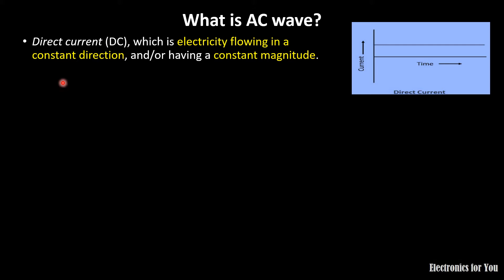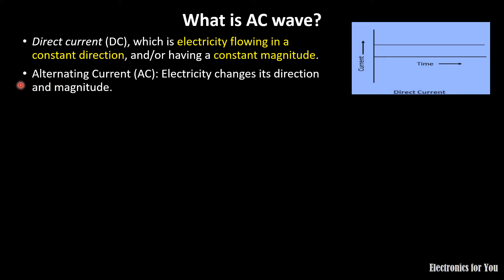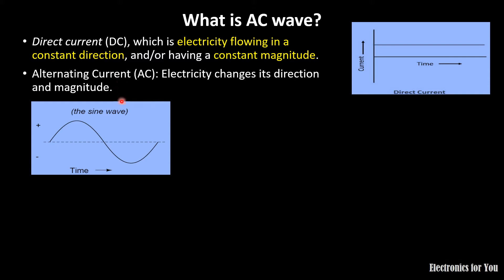The next one is alternating current, which is the main topic here. Alternating current has its direction and magnitude continuously variable — it changes its direction and magnitude. Whenever we talk about AC wave, the main waveform that comes to mind is the sine wave. Here we can observe that it changes its direction — from the positive side it goes to the negative side — and it has a changing magnitude as well, first increasing then decreasing, becoming zero, and then going negative.